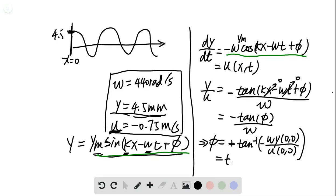So this is equal to arc tangent of negative 440 times y equals 4.5 millimeter, that is 0.0045 meter, and we know u is negative 0.75. This gives us 1.2 radians. So this is the phase difference for this wave.